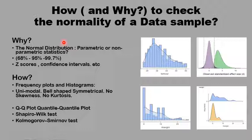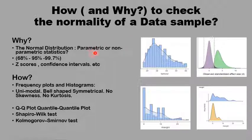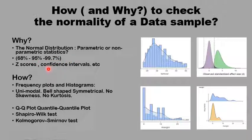If the set of data is distributed normally, we can assume where the central tendency is and how the data is spread around the mean. In that case we can characterize the set of data with few parameters, and then the more powerful parametric statistical tests can be employed in the data analysis. We can also make safe assumptions like the 68-95-99.7 rule, z-scores, and confidence intervals.